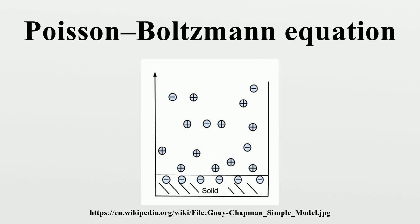As previously proposed by Helmholtz in the Helmholtz model, the Stern layer model goes a step further and takes into account the finite ion size. The Gouy-Chapman model explains the capacitance-like qualities of the electric double layer.